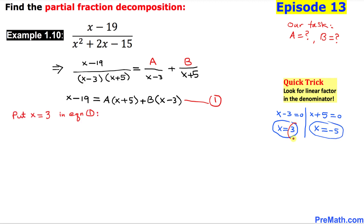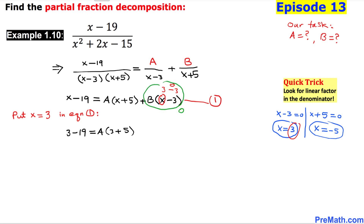Now let's look at x equals 3 first. I put x equal to 3 into equation 1, replacing every x with 3. On the left hand side this becomes 3 minus 19, equal to A times 3 plus 5. For the B term, 3 minus 3 becomes 0, so that whole term becomes 0. On the left hand side we get negative 16 equals 8A, which means A equals negative 2.